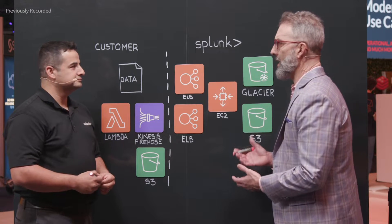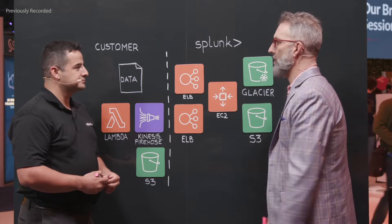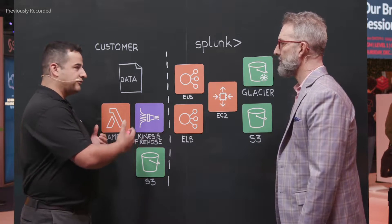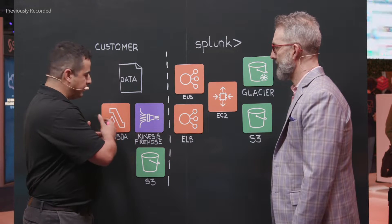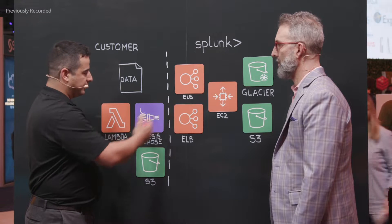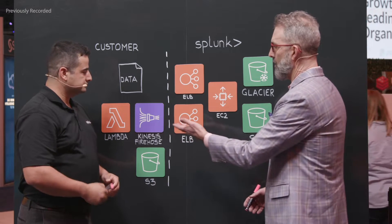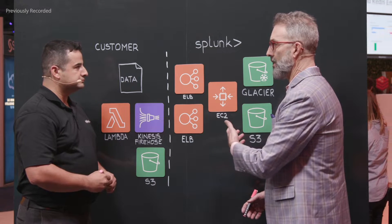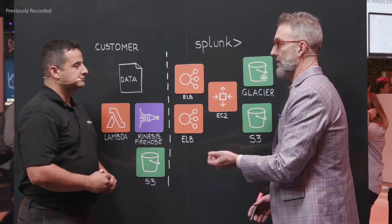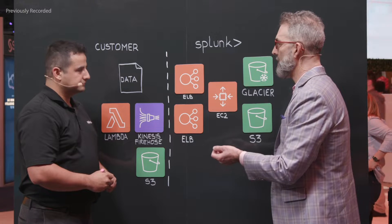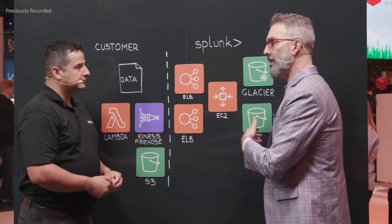We're going to talk about an aspect of your architecture today, and I see we've got a customer side and a Splunk side. Tell us what's going on here. On the left-hand side, you have a customer that's sending data into Splunk. They have multiple ways of doing so. Serverlessly, we support Lambda functions directly into Splunk, and also Kinesis Data Firehose directly into Splunk.